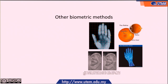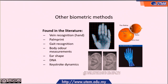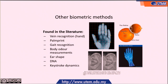There are some other biometric methods found in the literature, which include vein recognition, palm prints, gait recognition, body odor measurements, ear shapes, DNA, and keystroke dynamics.